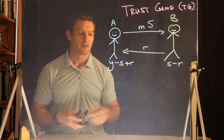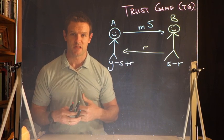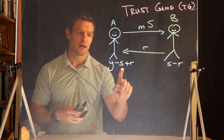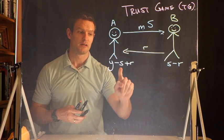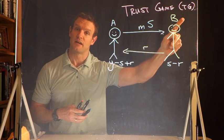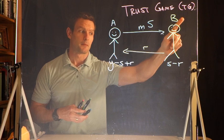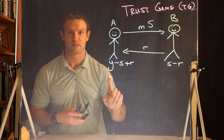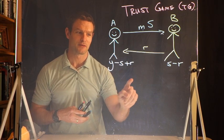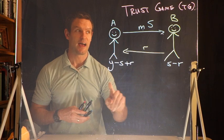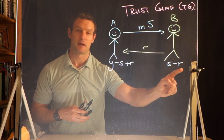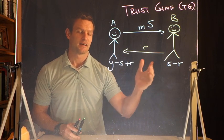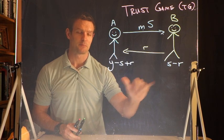For example, if A starts with $10, they send $5 to player B. The $5 gets tripled, so B gets $15. B could then send $5 back to A. A's payoff: 10 minus 5 plus 5 equals $10. B keeps 15 minus 5, which is $10. So both players end up with $10.